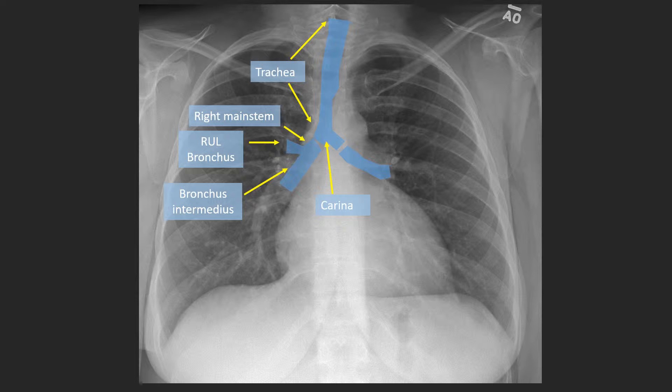Compare this to the left side. The left main stem airway is very long and horizontal, whereas the right main stem airway was very short and vertical.